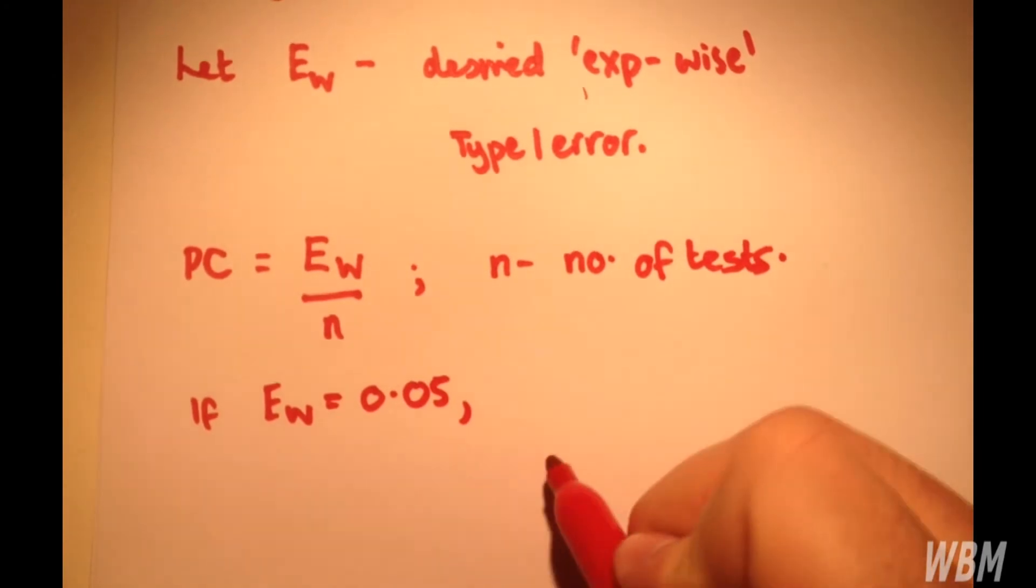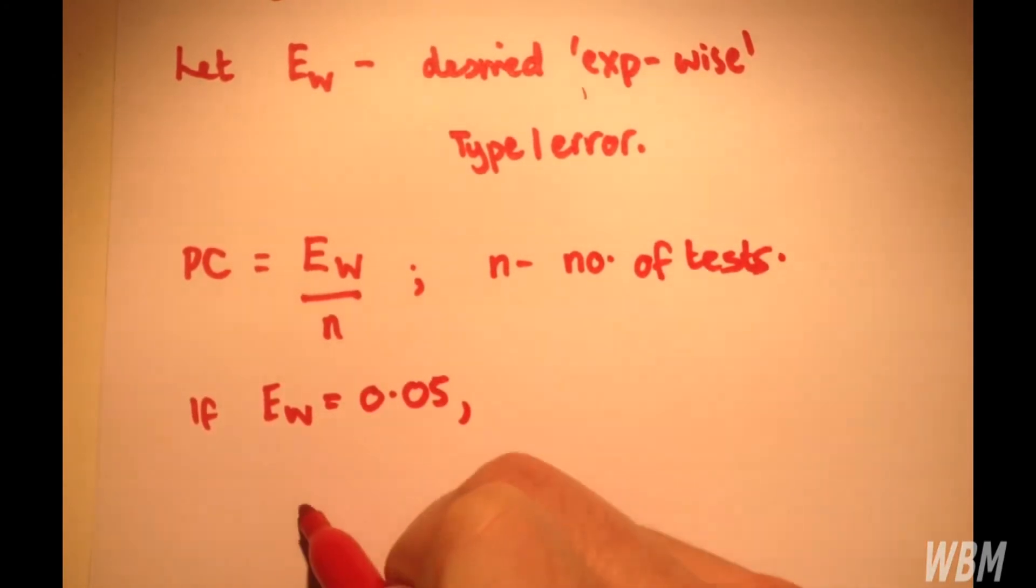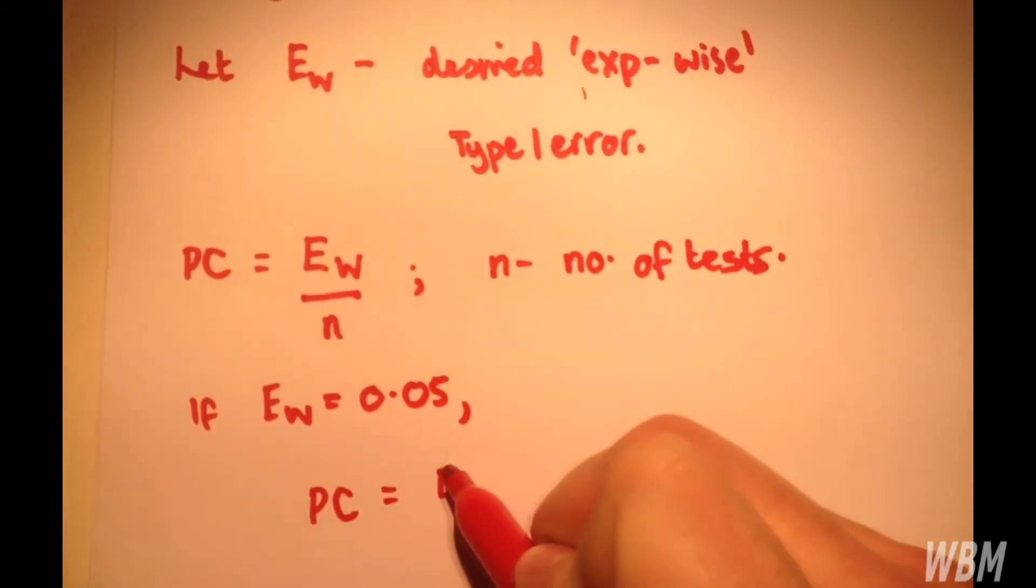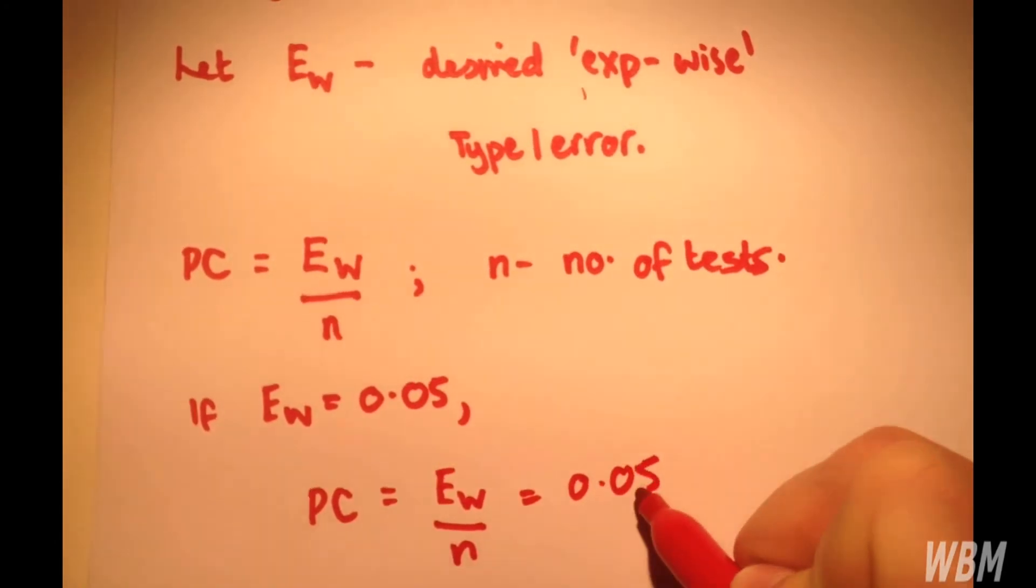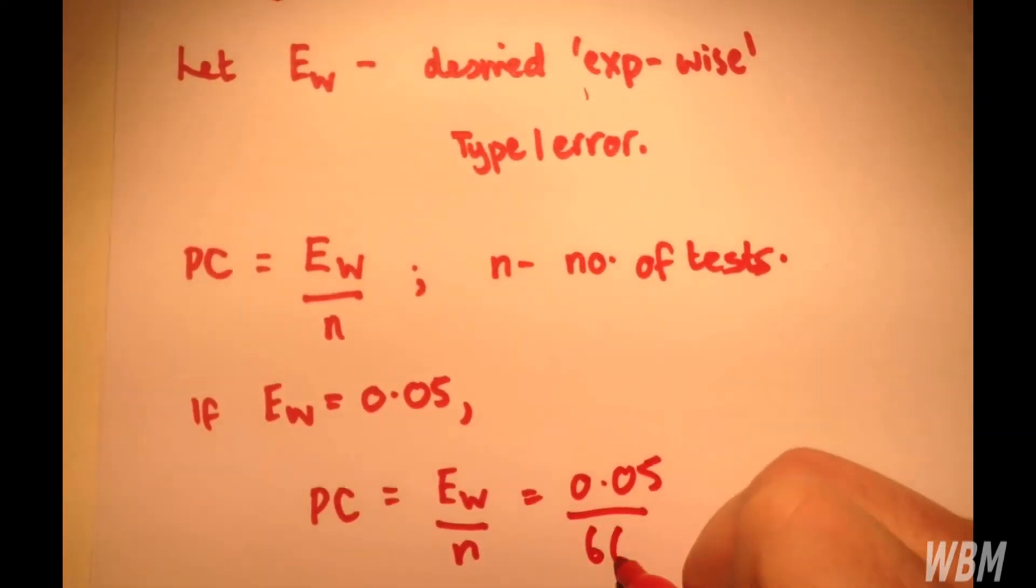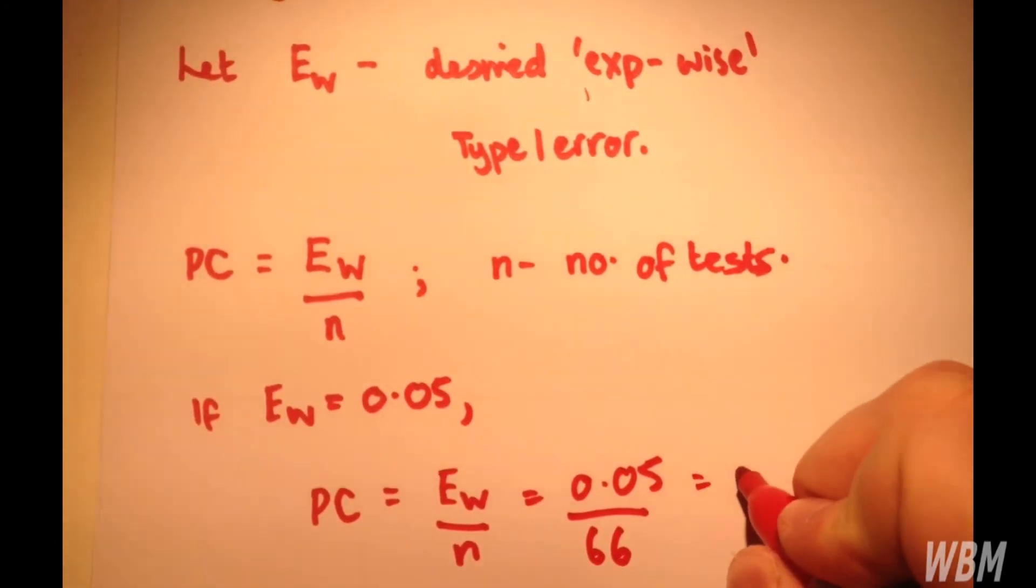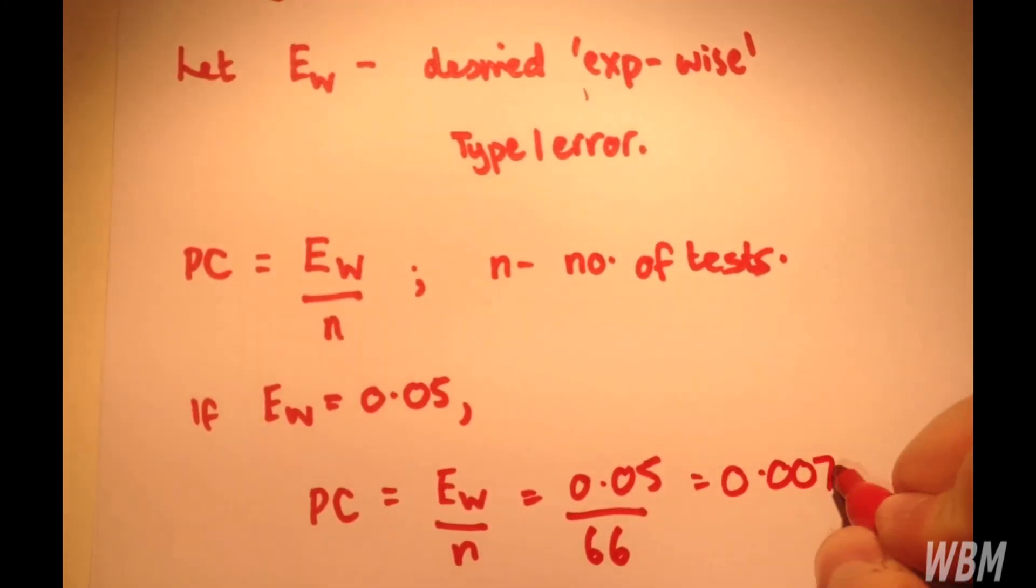all we have to do is as follows. The per comparison value equals E_W over n equals 0.05 over 66, 0.0076.